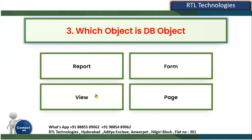View is a database object — it is stored in the database. Whenever you create a table, view, sequence, procedure, function, or package, those objects are not stored in your local machine or file server; they are stored in the database schemas. That is what makes them database objects.